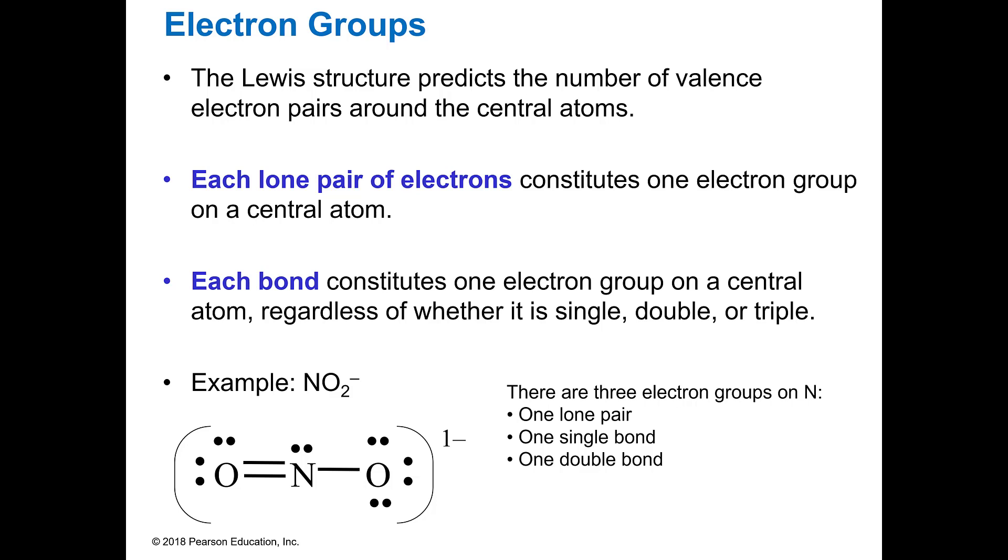So we need to define something first. And you're going to see some of this in your lab number five, the molecular shapes lab. And there's a handout, and then there's also a blackboard video where Dr. Hendricks goes through this whole procedure with you. Lewis structure predicts how many valence electron pairs are going to be around the central atom.